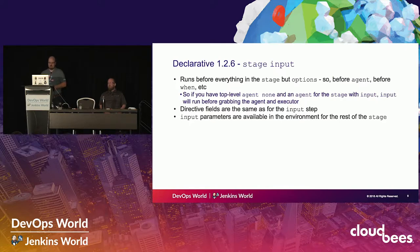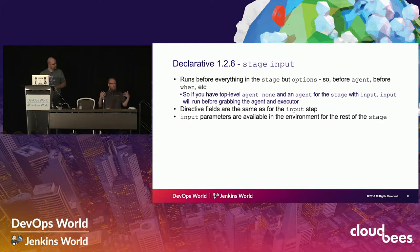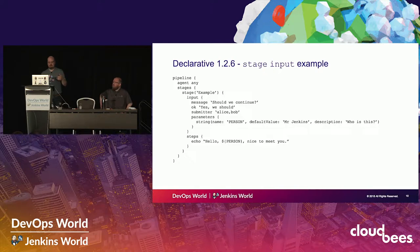The input runs before the actual everything in the stage except for the options, but before the agent and before all the when conditions. So if you have agent none at the top level and then you're waiting for an agent inside the stage, you can actually do the input before you allocate the agent. Which means you can have an input that's waiting for someone to approve it to go on to the next stage of deployment without beating up an executor on an agent for 18 hours or through the whole weekend.